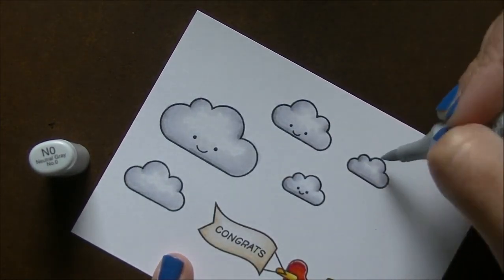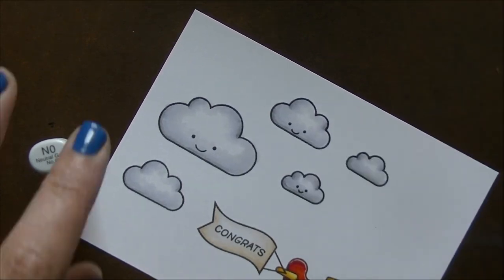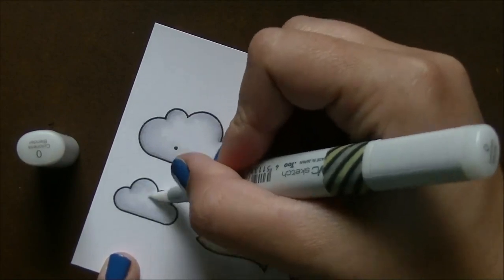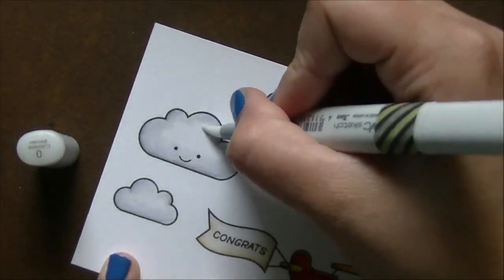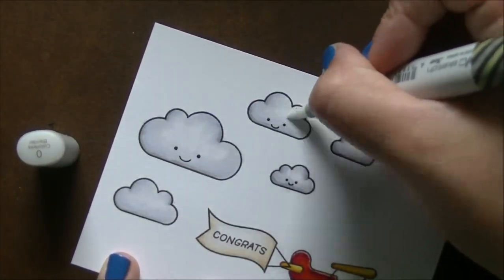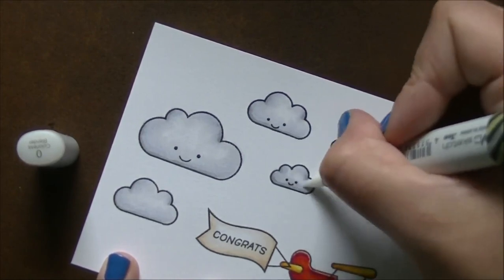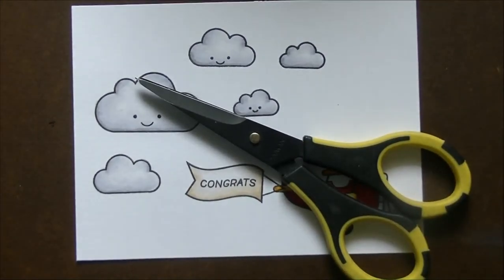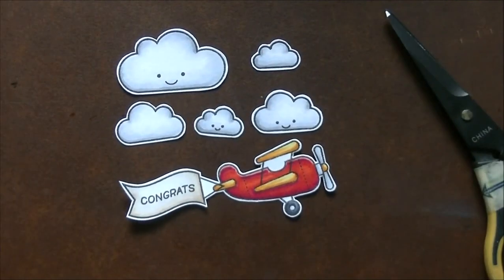N0 and then I'll blend everything together in the middle with the colorless blender which will push some of that color back and will make those clouds look a lot whiter than they currently do. Then I don't have the dies for this stamp set, so I'm just going to take my cutter bee scissors here and cut them all out. Poof, look at that, wasn't that fast.